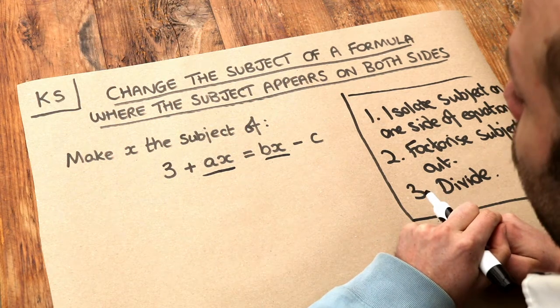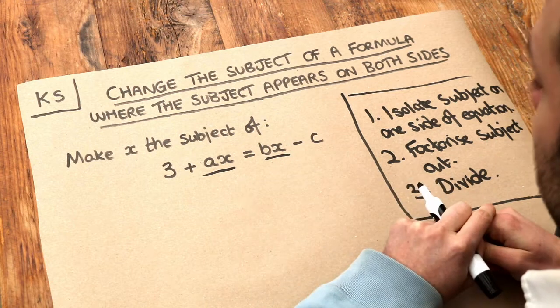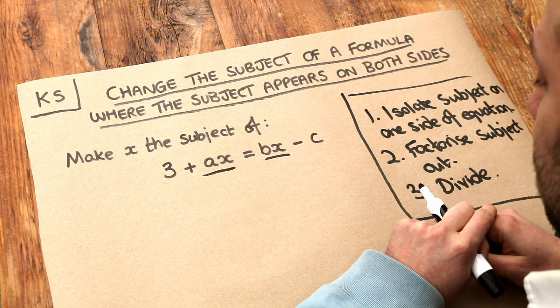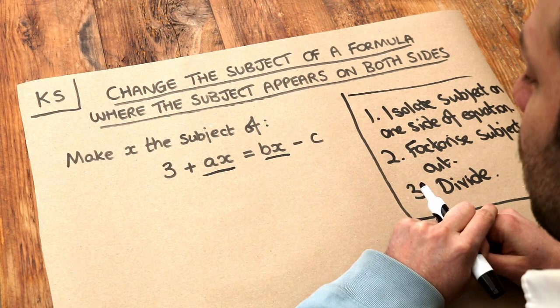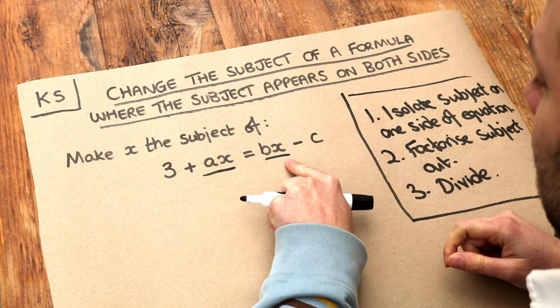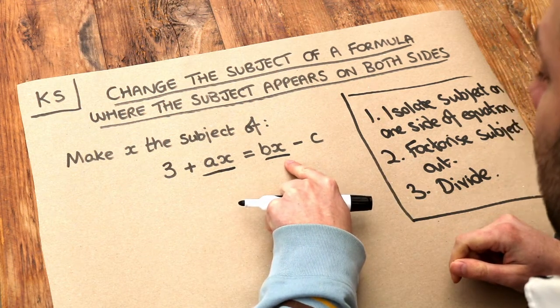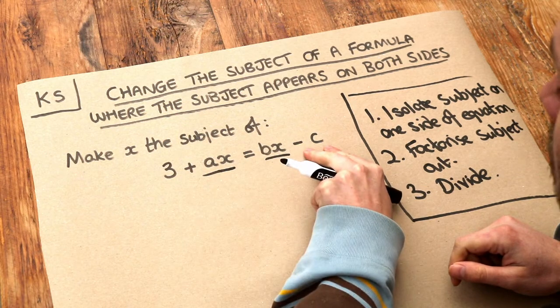You can decide to put all the x terms on the left hand side of the equation or the right hand side. It doesn't actually matter. I'm going to choose to put it on the right hand side because if I move the other stuff to the left, you've got a minus c here, and if you add c to both sides it's then going to be positive.